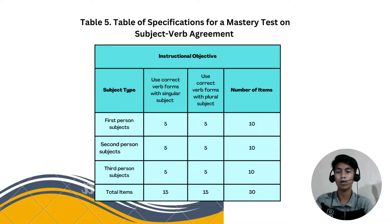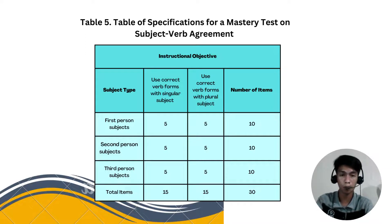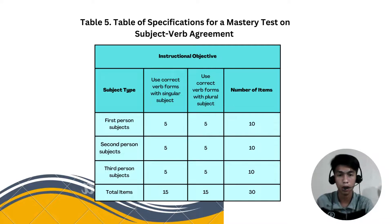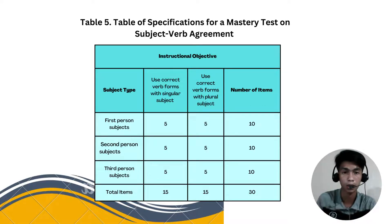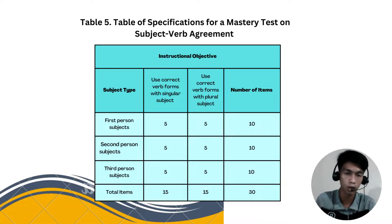Here in the table example, there is a table of specification for a mastery test on subject-verb agreement, in which the first column shows the subject type. In the second column, it indicates 'used correct verb forms with singular subject' and the corresponding points. Then, 'used correct verb forms with plural subject.' And the last column is the number of items.